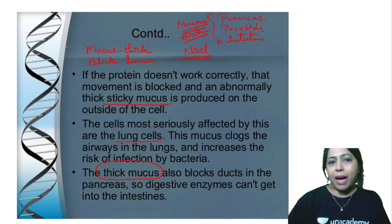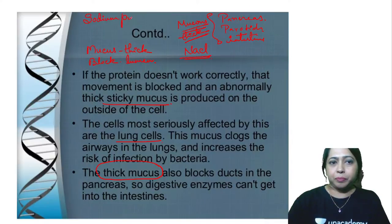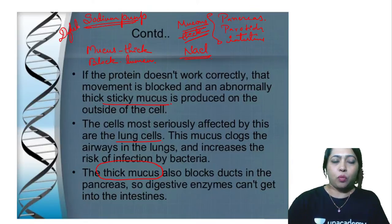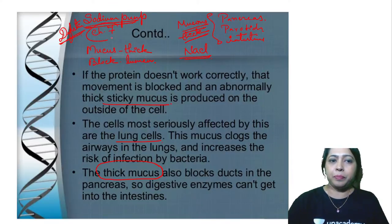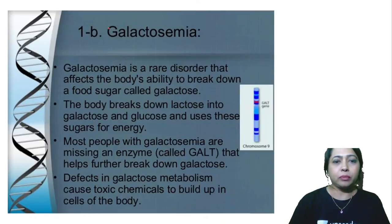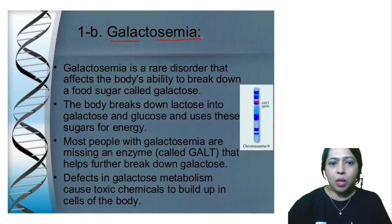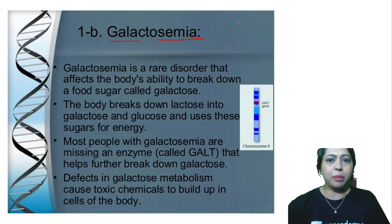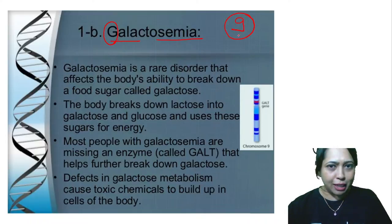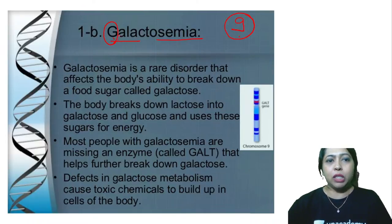So the defect is in the sodium pump, and the gene is on chromosome number 7. Next one is galactosemia — chromosome number 9. How to remember? Glossopharyngeal nerve is 9, so remember 9 for this gene.